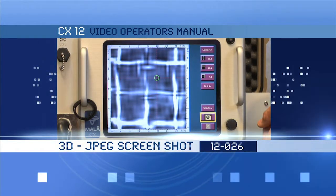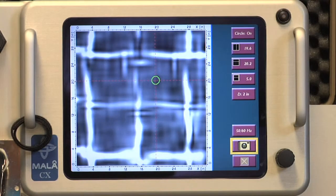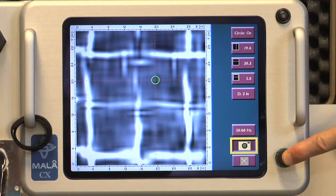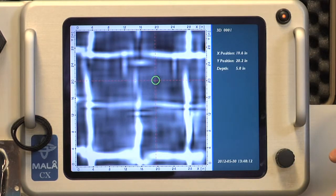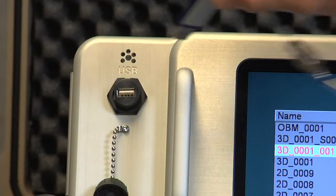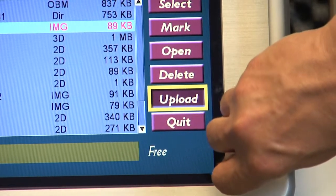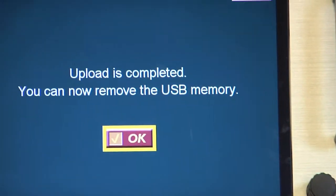JPEG Screen Shot Feature: Another feature in this menu is the camera feature. Select the camera icon and snap a JPEG image of the 3D slice with the drill locator or any other portion of the image. The image can then be uploaded to the USB memory stick supplied with your CX for presentations or archival purposes.